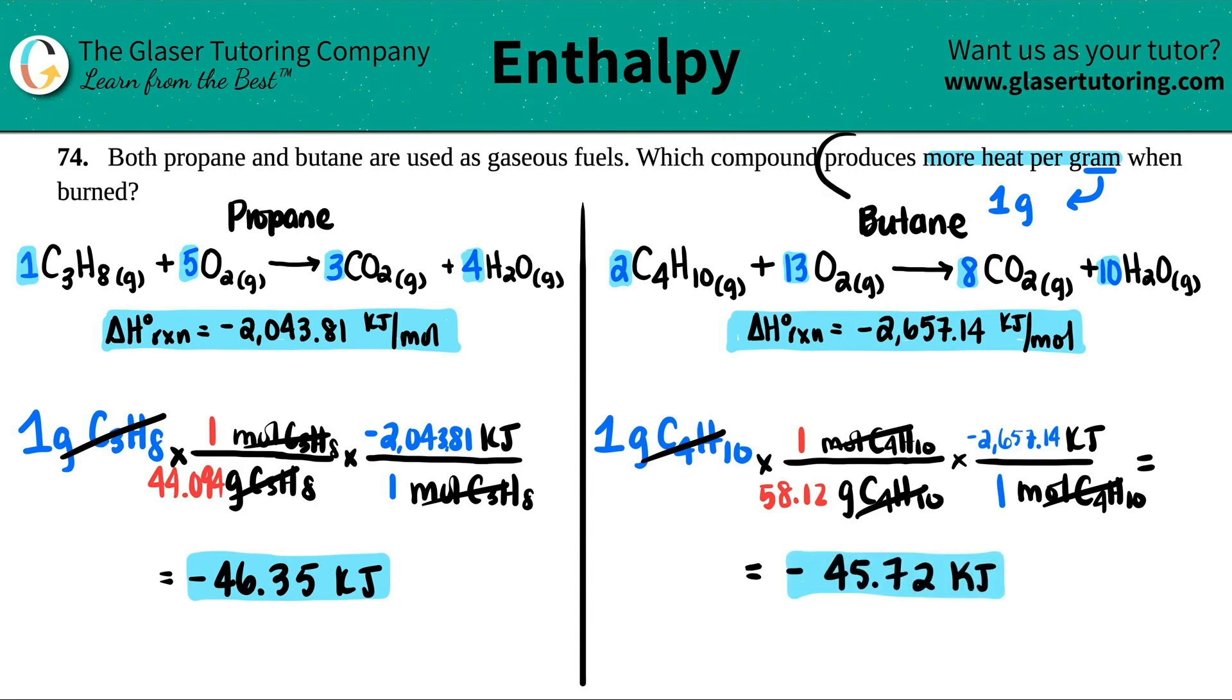Now, which one produces more heat? Don't worry about the negative. Remember the negative means that it's just being released. 46.35 is bigger than 45.72. So actually propane is going to produce more heat per gram. So it is propane. And that's it. So all we had to do was just basically compare the two numbers and then don't look at the negative value. How much is going to be produced? It's just 46.35 versus 45.72. Since 46 is a higher number, not looking at the negative, this is going to produce much more heat.